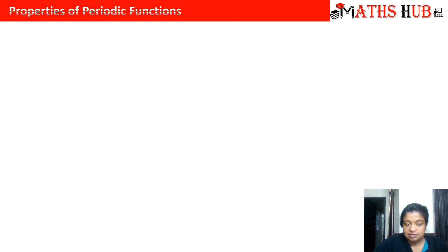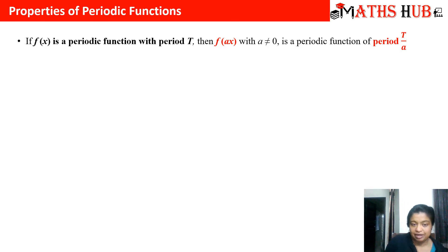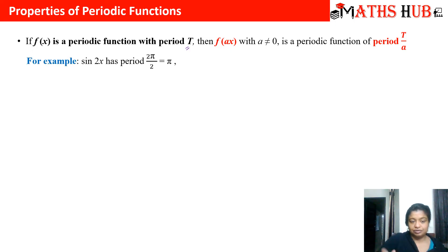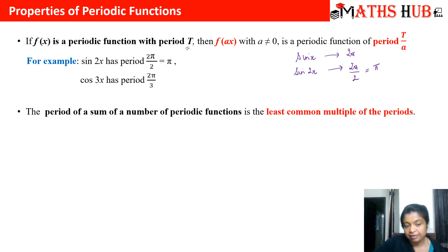Property 4: if f(x) is a periodic function with period t, then f(ax) — with a ≠ 0 — is a periodic function with period t/a. So if f(x) has period t, then f(ax) has period t/a. For example, sin(2x) has period 2π/2 = π, because sin x has period 2π. Similarly, cos(3x) has period 2π/3.